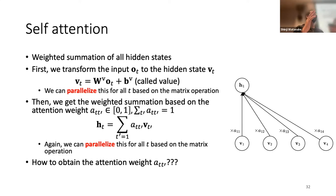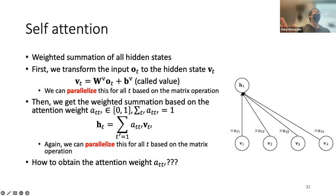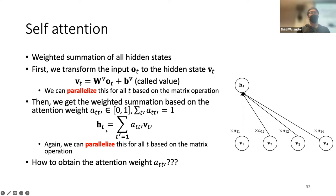Self-attention is a weighted sum of all hidden states — simply a weighted sum, though internally it's a bit complicated. In the transformer encoder style, what we do is convert the input to some variable, similar to a feed-forward layer. Then self-attention computes a weighted sum across all data points b_t based on attention weights to get a new h_d. The b part is just a linear transform. So self-attention is very simple: it's a weighted sum with a linear transform.